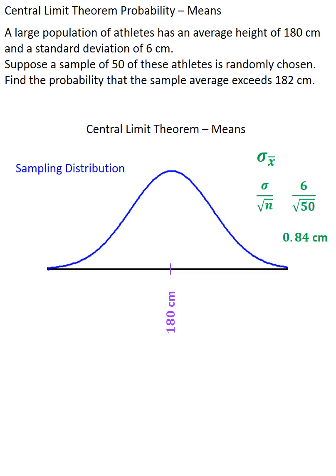So this question wants to know the probability of the sample average exceeding 182 centimeters. Where is 182 centimeters on my sampling distribution? Now I could draw it anywhere to the right of 180, but I'd like to get a more appropriate scale. So in order to do that, I want to show you a cool trick for proper scaling of a normal distribution.